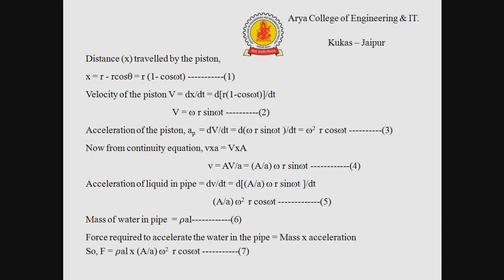The distance travelled by the piston, shown by equation number 1, is x = r(1 − cos ωt). Velocity of the piston v = dx/dt; substituting from equation 1 and differentiating with respect to t gives equation number 2: v = ωr sin ωt. The acceleration of the piston = dv/dt; substituting from equation 2 and differentiating gives equation number 3: acceleration = ω²r cos ωt.